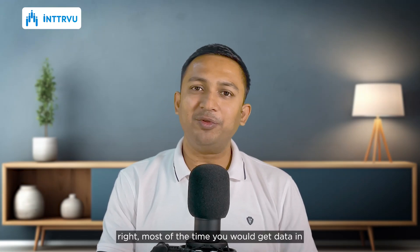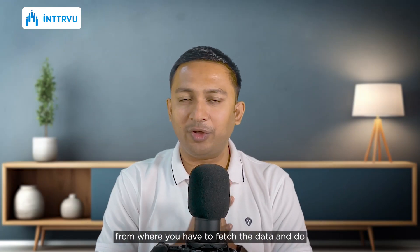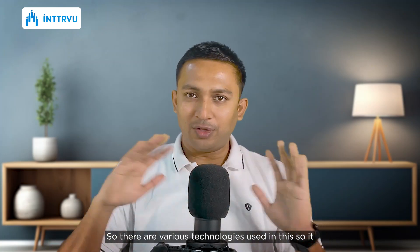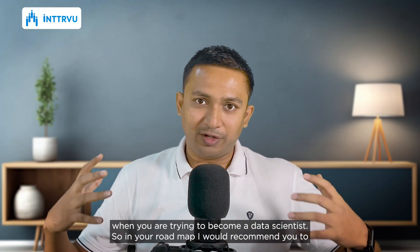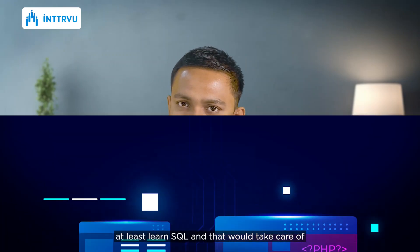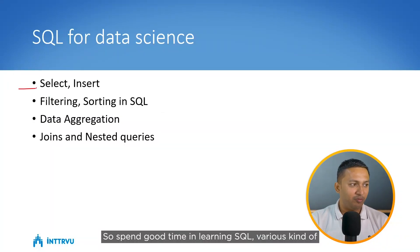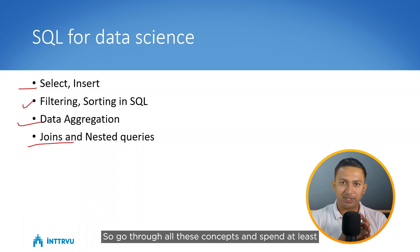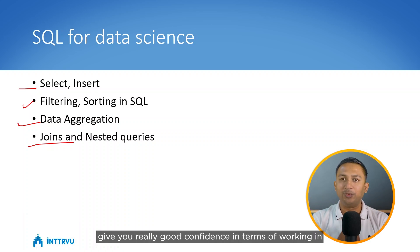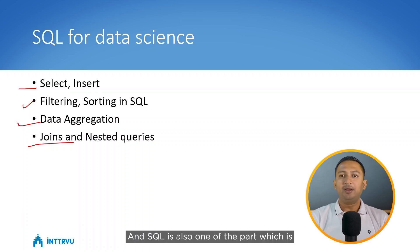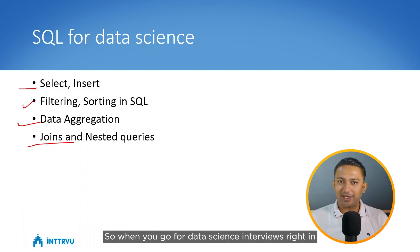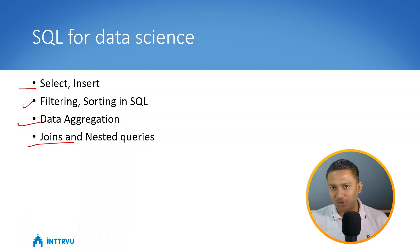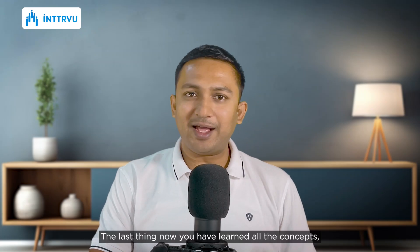As a data scientist, you will often get data from a database or data lake, so you need SQL. In your roadmap, at least learn SQL thoroughly — it will cover most of your data access needs. Spend good time on various SQL queries: how to filter and sort data, data aggregation, joining multiple tables, and writing nested queries. Spend at least one to two weeks on SQL, as it is also commonly asked in data science interviews alongside Python.